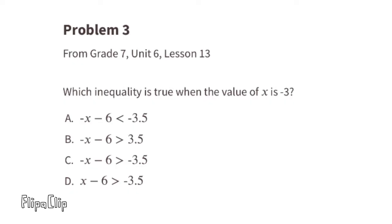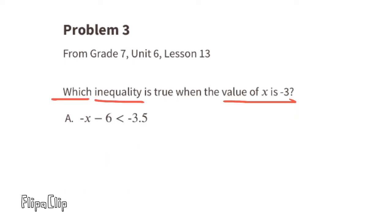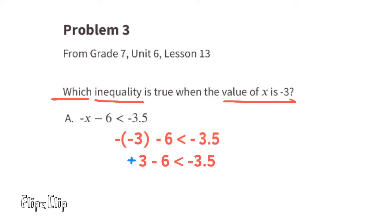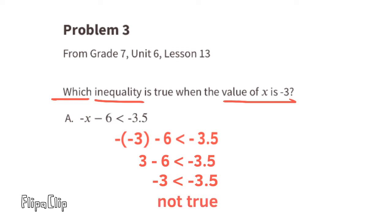Problem number three from 7th grade Unit 6 Lesson 13. Which inequality is true when the value of x is negative 3? Option A: negative x minus 6 is less than negative 3.5. Substituting x with negative 3: the opposite of negative 3 minus 6 is less than negative 3.5. Since negative times negative is positive, this becomes 3 minus 6, which is negative 3. So the inequality reads negative 3 is less than negative 3.5 — that's not true, because negative 3 is greater than negative 3.5.